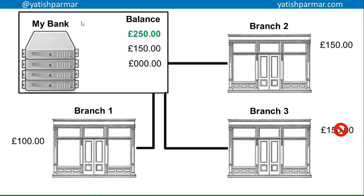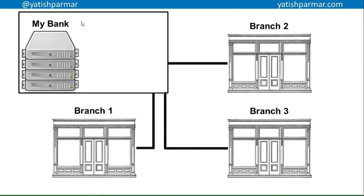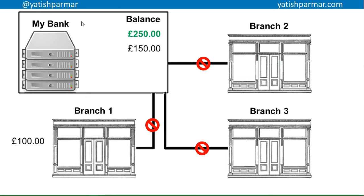Now think about what might happen in terms of maintaining data integrity when things compromise data security. You go to branch one and draw £100 — balance goes down to £150. In the meantime, the network goes down and branches can't update their transactions with the main database. You go to branch two and draw £150, then quickly go to branch three and also draw £150. When everything comes back online, both branches update the new balance to £0, meaning you've gained a free £150. This shows how things can compromise data integrity.